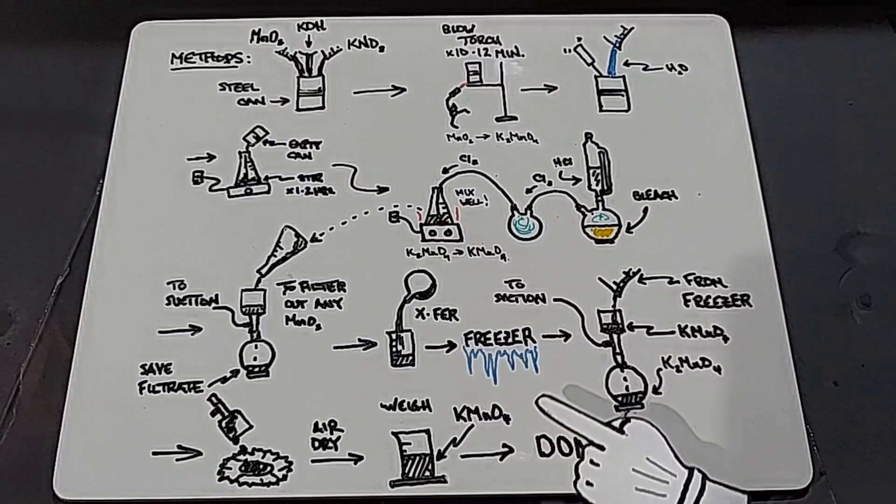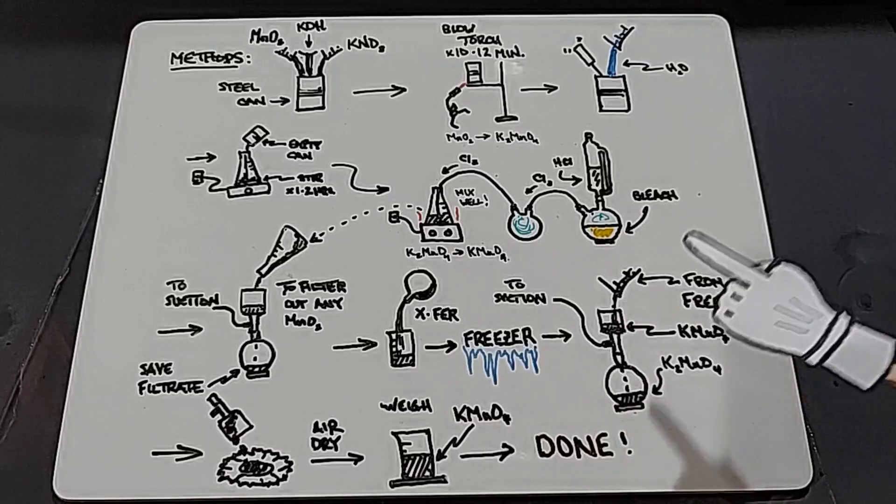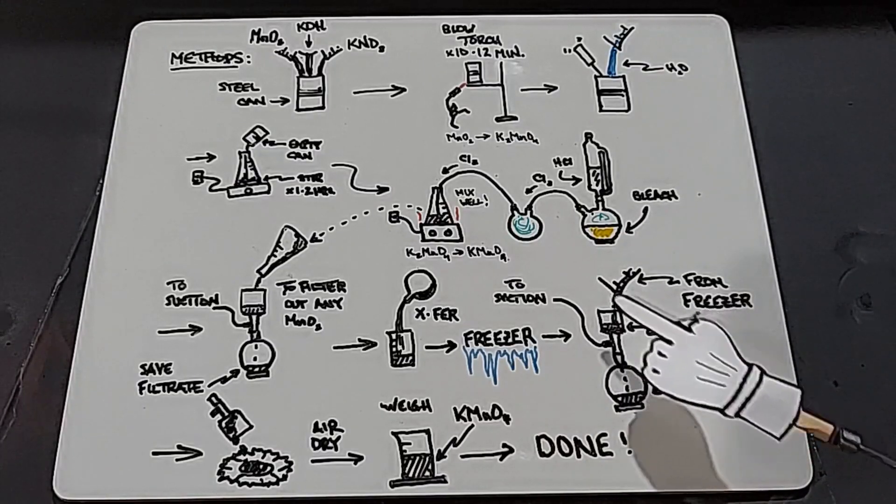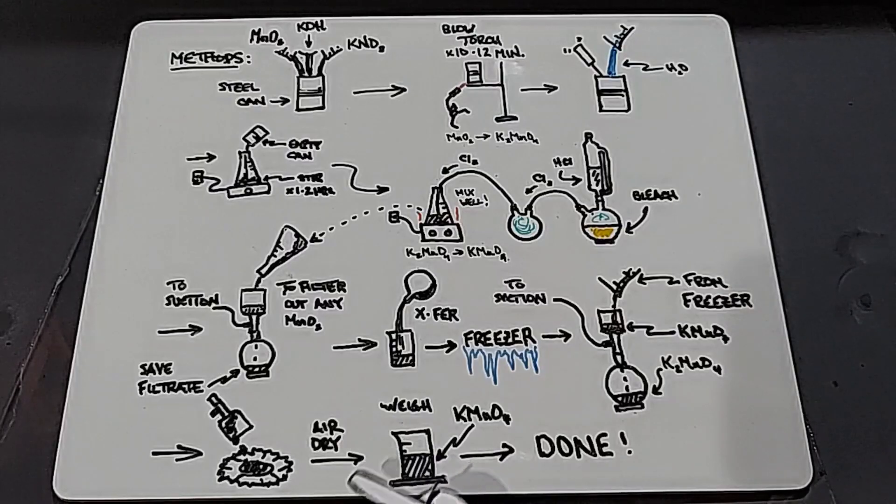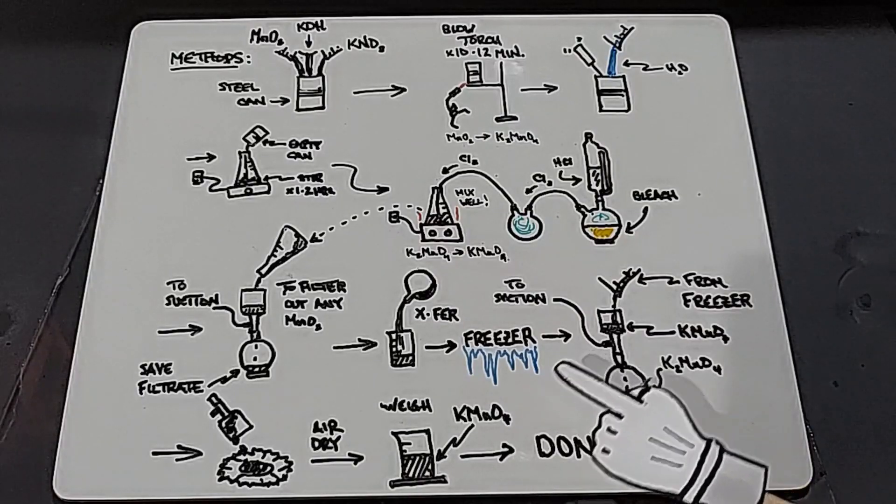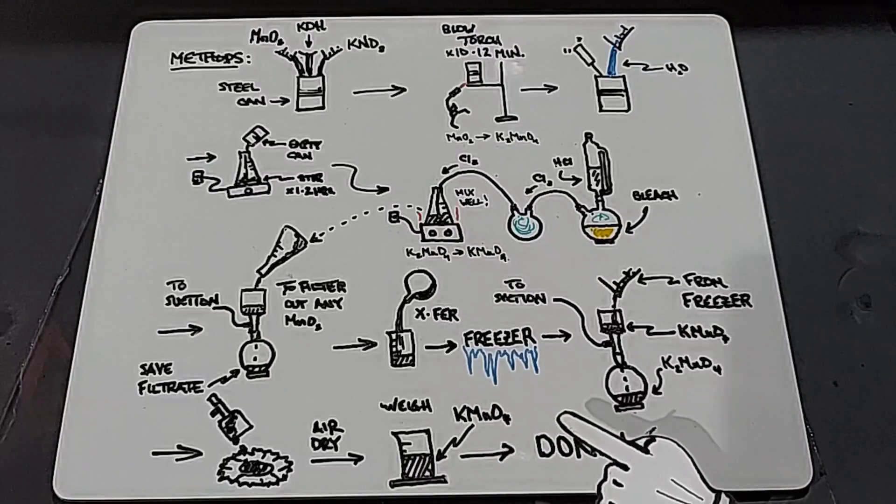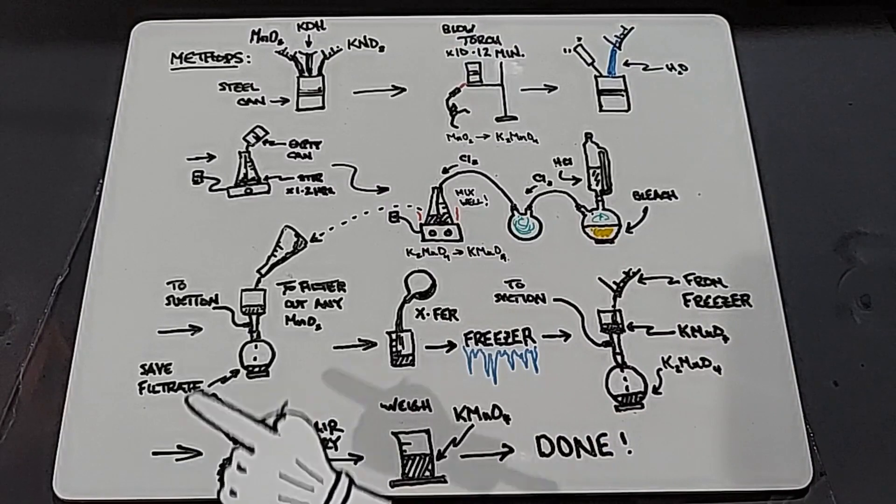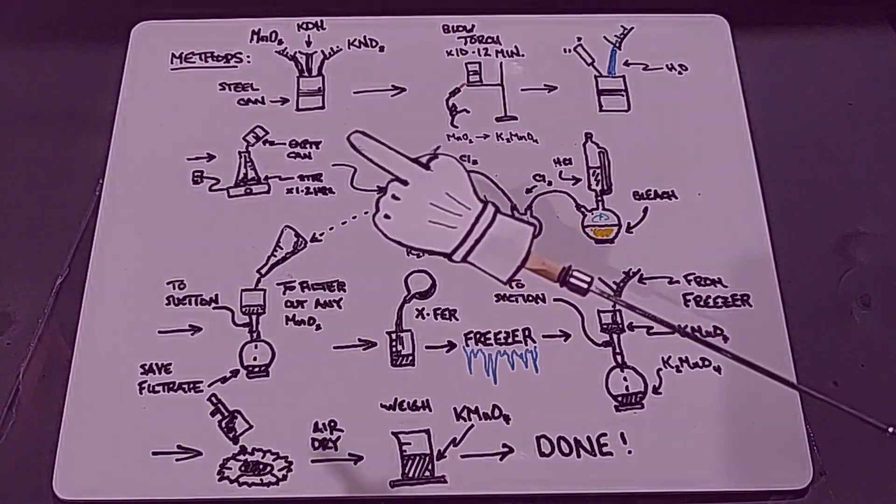When the potassium permanganate crystals form in the freezer, I'm going to suction filter again, saving the potassium permanganate on top, dump it out, air dry it, weigh it, and we're done. I'll probably do a simple test or two just to make sure we got what we think we got. Let's definitely get onto the experiment and make some potassium permanganate.